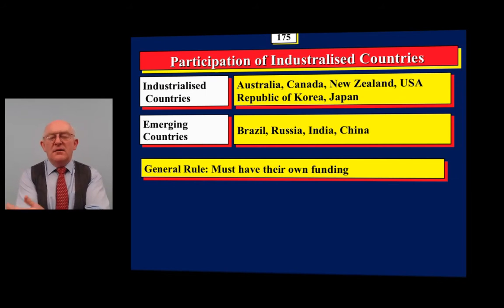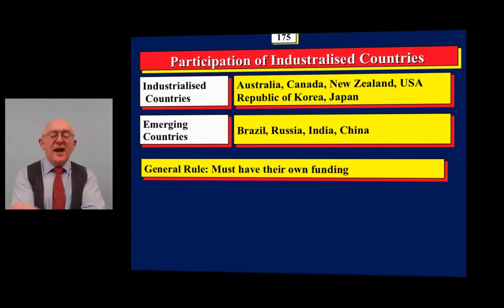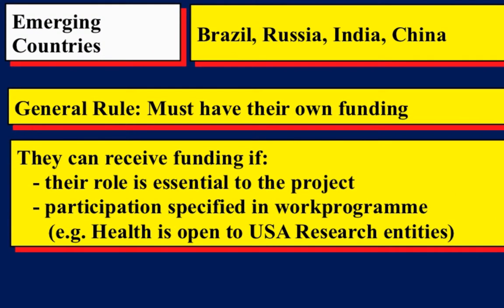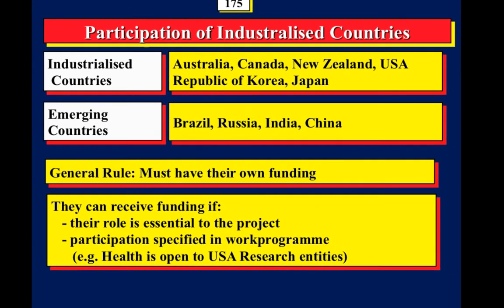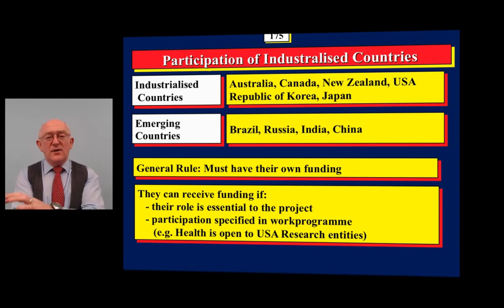Let's take America as a case study. Can an American university, research center, or company participate in Horizon 2020? The answer is yes — they can participate, but the general rule is that they bring their own funding. There are some exceptions: if you can prove the research cannot be done by a European organization, or if there is a bilateral agreement. For example, the NIH programme in America is open to European researchers, so the equivalent programme in Horizon 2020 is open to American researchers who can receive funding. A Chinese partner, however, can participate in such a programme but does not get funding.